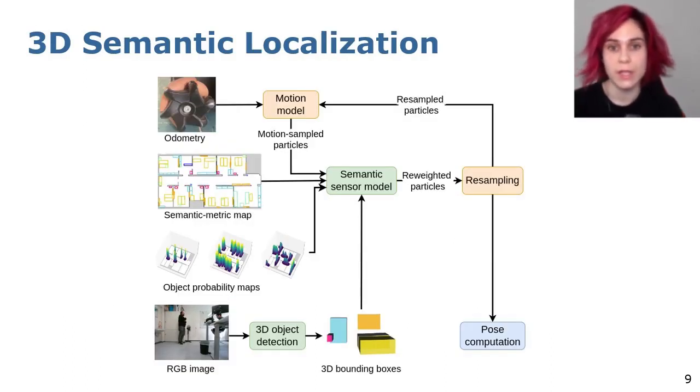We globally localize using a Monte Carlo framework, integrating semantic information through our novel semantic sensor model. We use our 3D metric semantic map to localize considering both geometric features and semantic cues based on the probability analysis of the accuracy of the 3D object detection model.